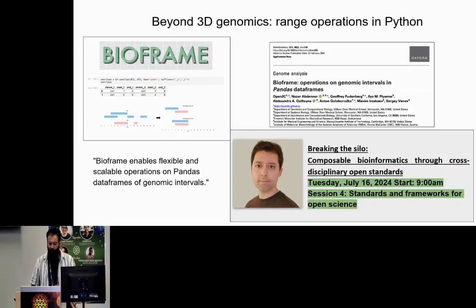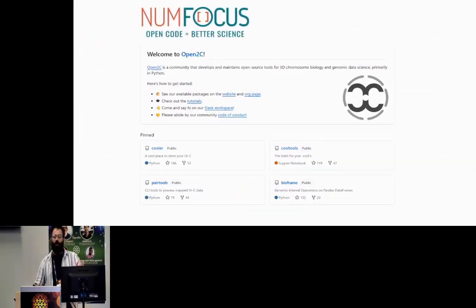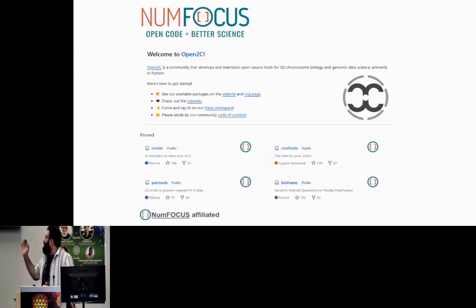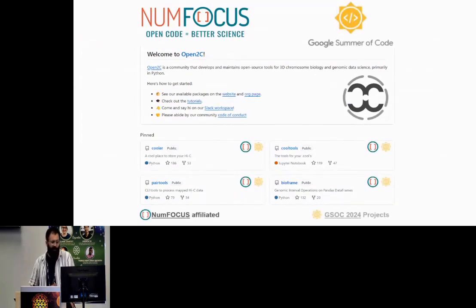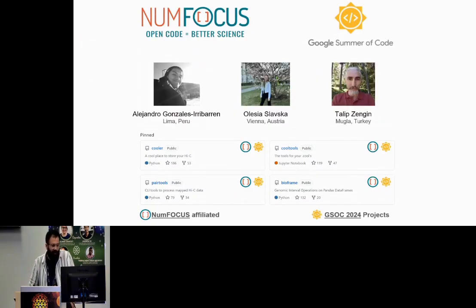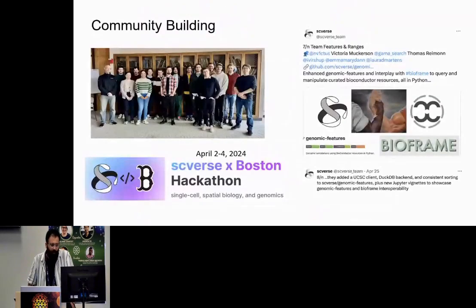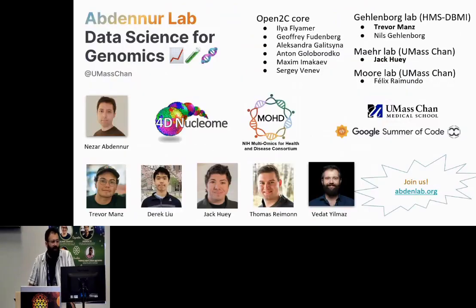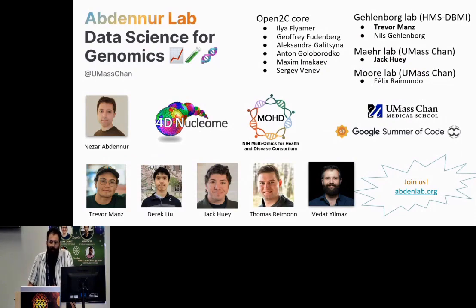We have four packages that receive NumFOCUS affiliations, and with those same four packages we also accepted Google Summer of Code participants. Here are our three excellent participants — we are grateful to Google for the funding. For community building, this spring we hosted our first hackathon with the scverse, and we look forward to more of these events. Lastly, I'd like to thank my PI Nezar Abdennur and our funding sources: the Nucleome Consortium, the Multi-omics for Health and Disease Consortium, and Google Summer of Code for the summer contributors. Thank you.